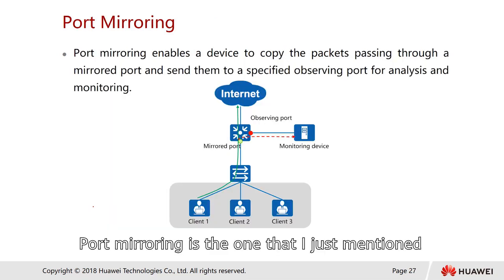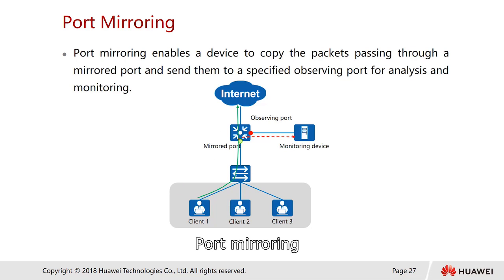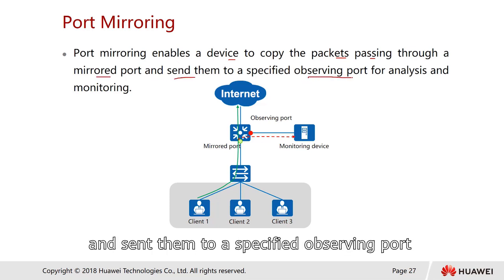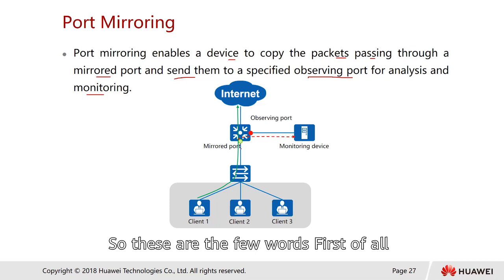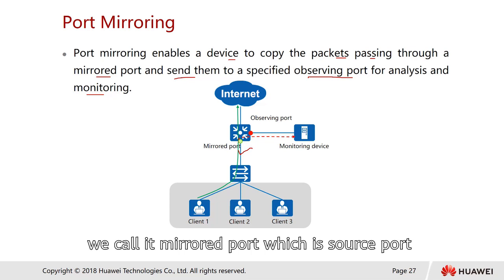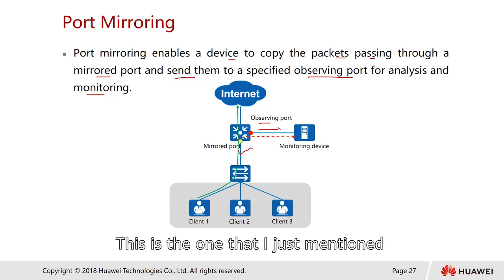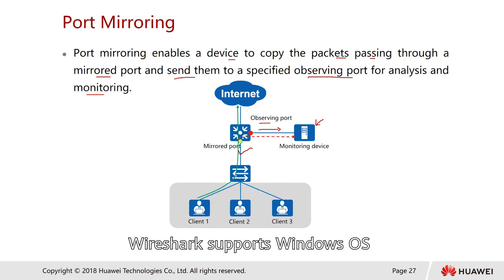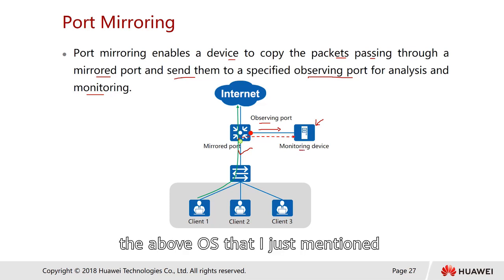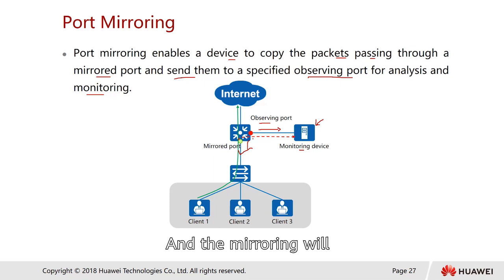Port mirroring enables the device to copy packets passing through a mirror port — the source port — and send them to a specific observing port for analysis and monitoring. A laptop or computer running Wireshark, which supports Windows OS, Mac OS, and Linux OS, can be connected to the observing port. The mirroring will constantly send packets to the monitoring device.